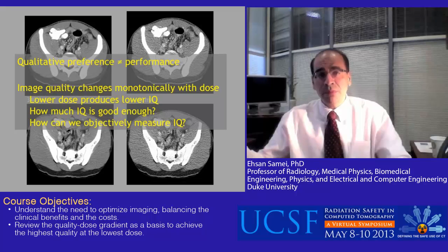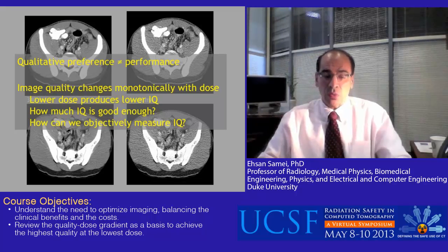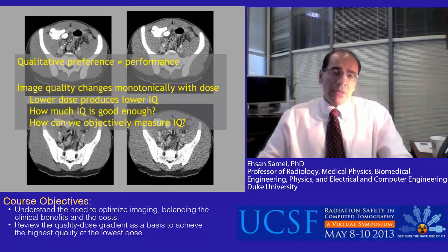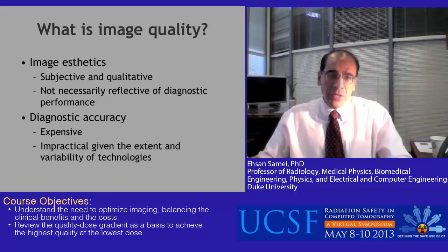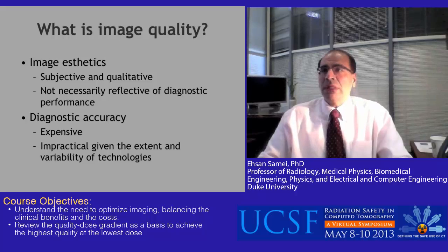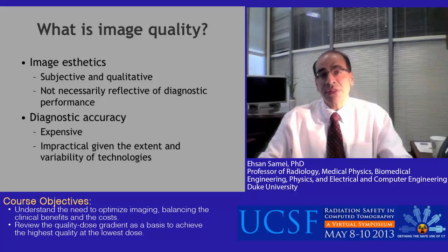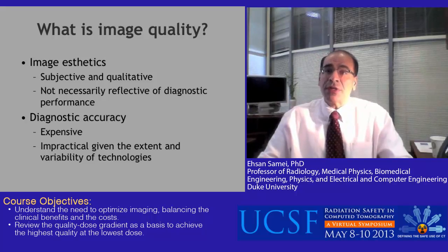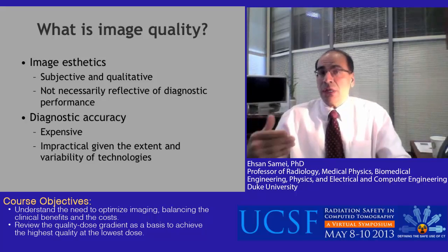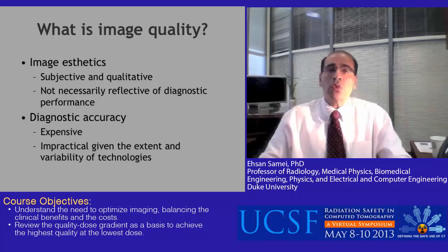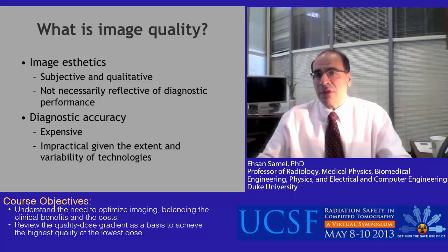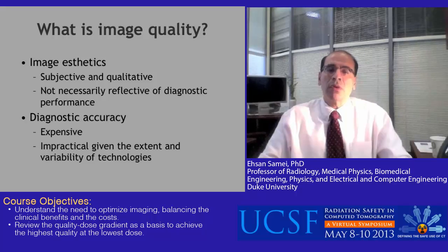In order to make that determination, we need to have measures of image quality. What is image quality? We often think in terms of image aesthetics, which are subjective and qualitative. However, image quality is best characterized in terms of diagnostic accuracy. The problem with diagnostic accuracy is that it is very difficult and expensive to measure, especially considering that there are many factors that affect image quality and radiation dose, making the measurement quickly impractical.